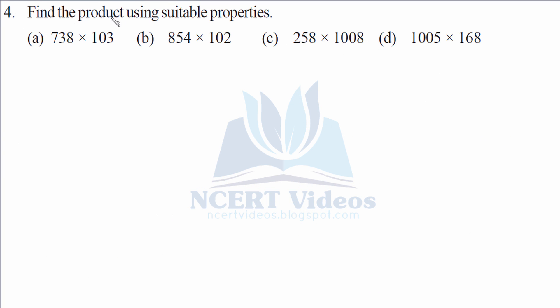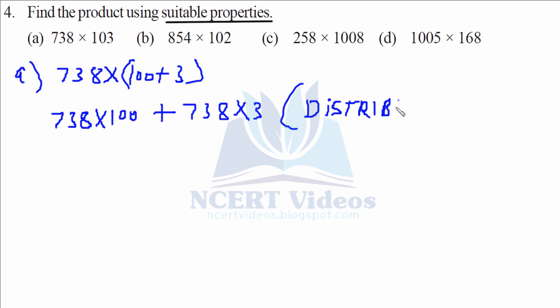Fourth, find the product using suitable properties. Again, what we have studied in this chapter is properties. So we are using it. Part a. 738 is a bit complex, just write it as it is. What we can do with 103 is 100 plus 3. It can be written. So we are splitting it. Now we are using distributive property that you have studied in this exercise. So it becomes easier. Why we use this distributive property? To make our calculation easier by splitting. So when we multiply this, it is 73800 plus 2214.